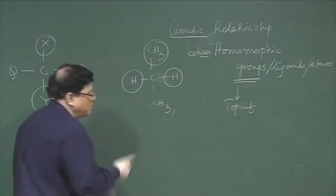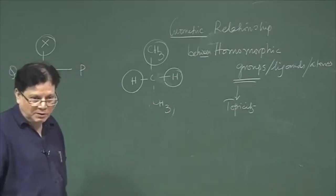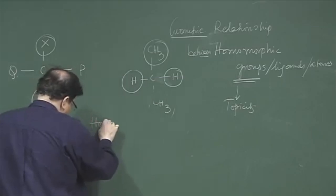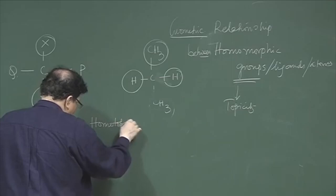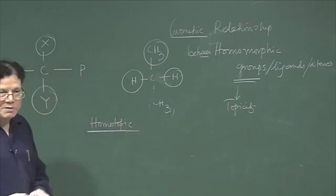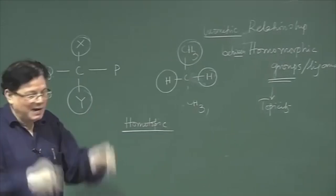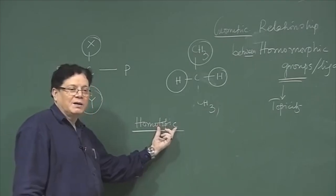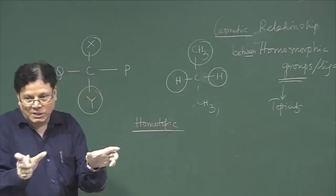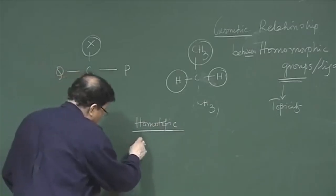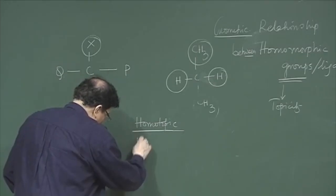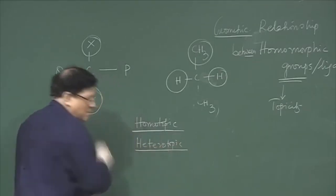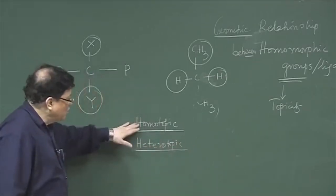There are different types of relationships that are possible. One is called homotopic, and there are sets of ligands which are heterotopic. Homotopic or heterotopic — the names suggest that homotopic means there is no difference between the ligands we are considering.